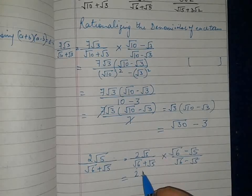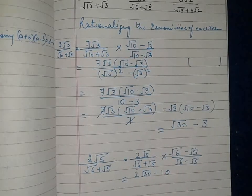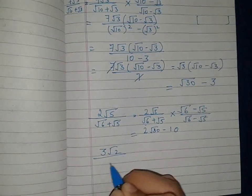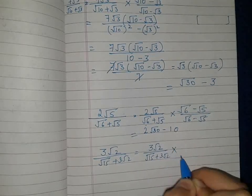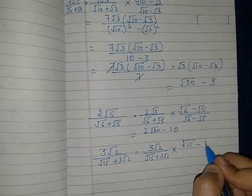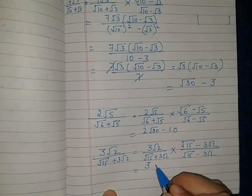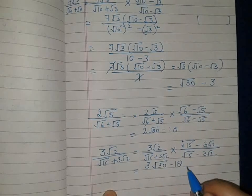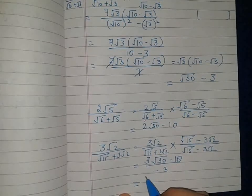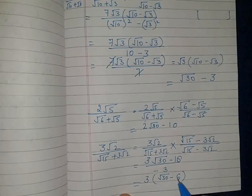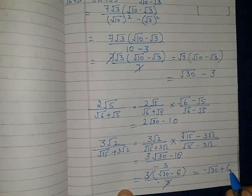For the third term, 3√2 / (√15 + 3√2), the rationalizing factor is (√15 − 3√2). Rationalize it yourself showing all steps. The result you will get is 3(√30 − 6) / (15 − 18) = 3(√30 − 6) / (−3) = −(√30 − 6) = −√30 + 6. So the third term gives (−√30 + 6).